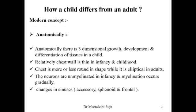The chest wall is thin during infancy and is more or less round in shape during childhood, while it is elliptical in adults. The heart is in a horizontal position in infancy, becoming vertical or oblique in adulthood. Cranial bone sutures are open in a neonate and become fused later. Neurons are unmyelinated in infancy and myelination occurs gradually — this is the main reason neurons are exposed to poliovirus during infancy. The accessory sinuses are not well developed in newborns, and sphenoidal and frontal sinuses develop by 3 to 7 years.